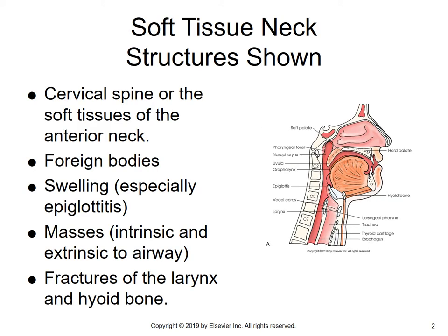Let's do a little bit of review and talk about the soft tissue structures of the neck. We've got the cervical spine posteriorly and then the soft tissues of the anterior neck area, such as the laryngeal pharynx area and the trachea. Soft tissue neck studies are generally done to rule out the presence of foreign bodies, however they're also done for any swelling, especially in children where they may have epiglottitis or croup. Soft tissue neck is done to rule out epiglottitis.